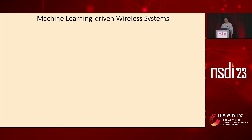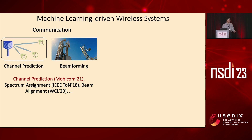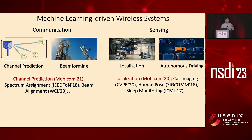Machine learning has enabled many key features in wireless systems and has gained a lot of interest in both industry and academia. For example, in the communication domain, we've seen a lot of papers published in top conferences leveraging machine learning for channel prediction, spectrum assignment, beam alignment, and so on. Industry also started to leverage machine learning for applications such as beamforming. On the other hand, we've also seen a lot of applications in the sensing domain, such as ML-based localization and autonomous driving.